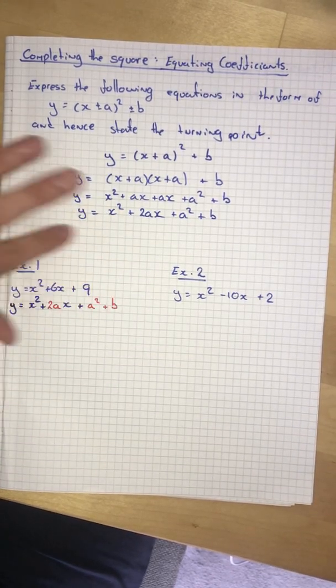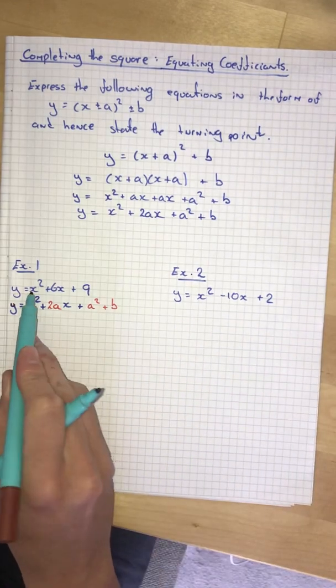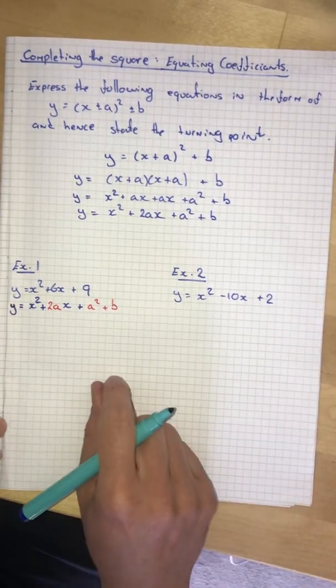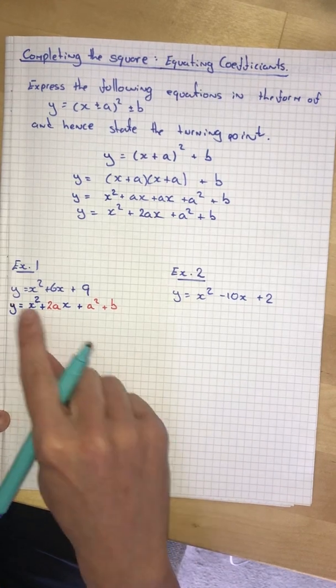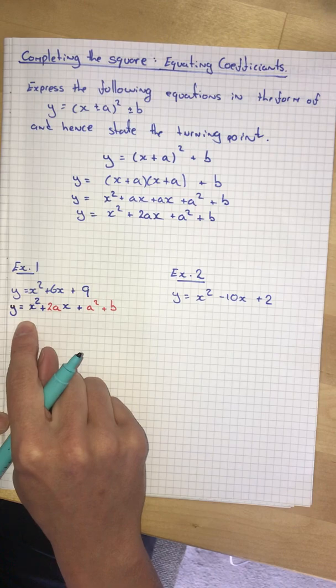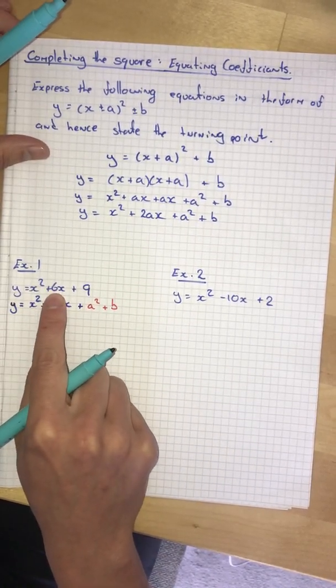What we're going to hopefully see is that looks very very similar to each other. And if we compare each of the terms, and that's what I mean by equating the coefficients, what is the coefficient of the x squared? There's no number there, which means it is 1. What is the coefficient of the x squared here is also 1. So that makes sense. But that's not going to help us solve it. What is the coefficient of the x term? It is 6.